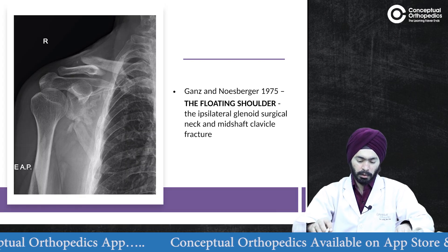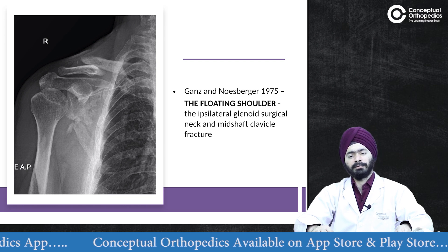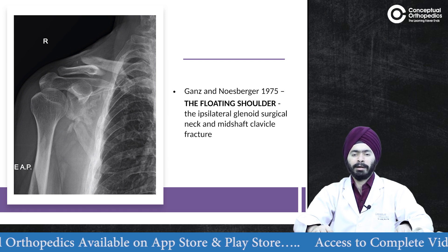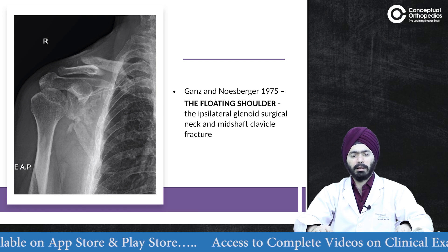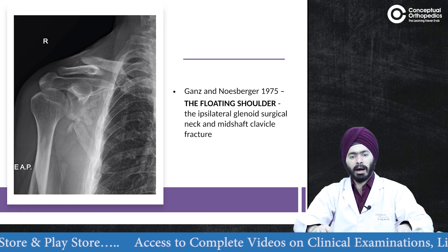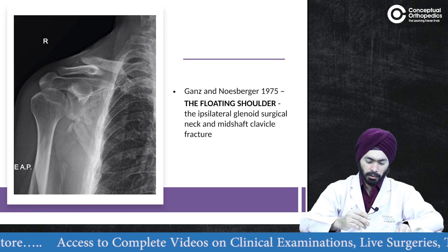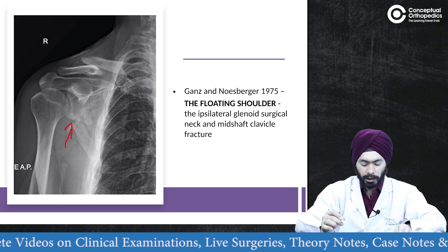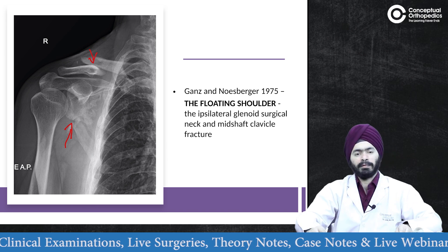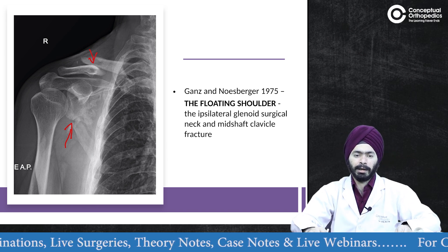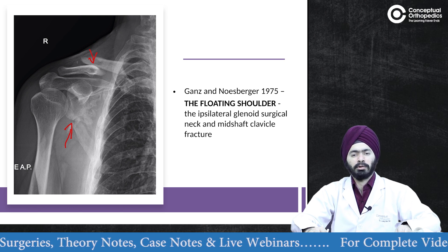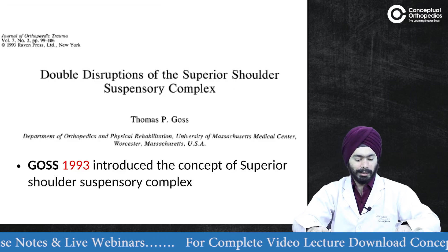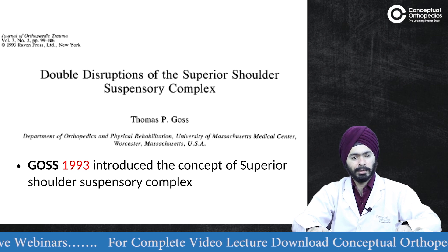Way back in 1975, Gans came up with the term 'floating shoulder.' He said a floating shoulder is a fracture of the ipsilateral glenoid surgical neck and mid-shaft clavicle fracture — a surgical neck of the glenoid and a mid-shaft clavicle fracture of the same side.